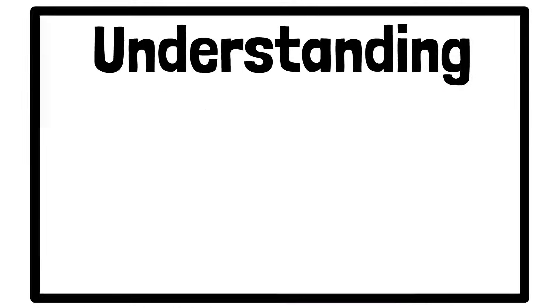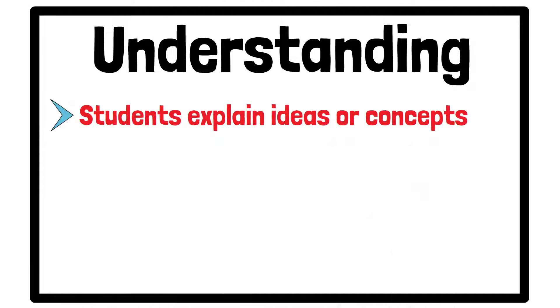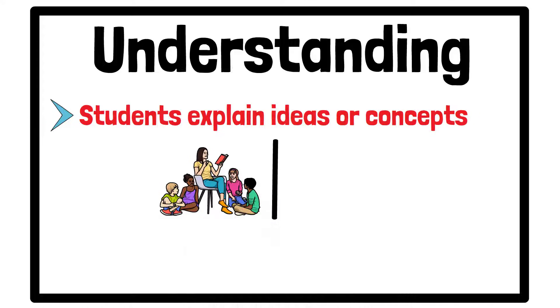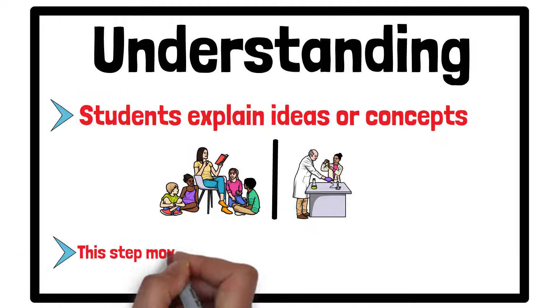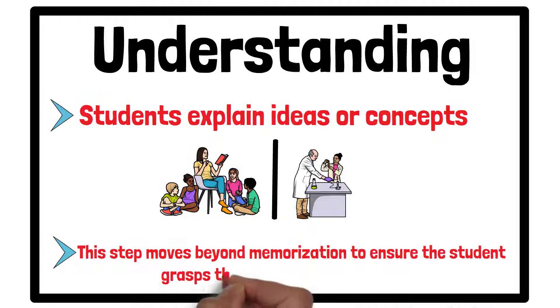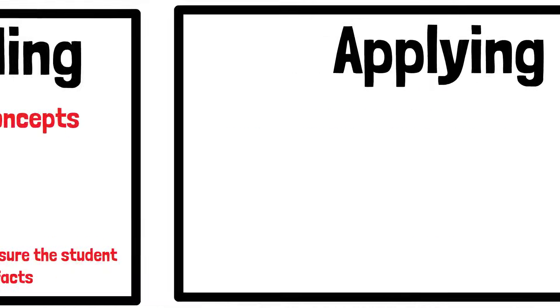Understanding is the second level. Here, students explain ideas or concepts. They might summarize a chapter in their own words or explain how a scientific process works. This step moves beyond memorization to ensure the student grasps the meaning behind the facts.